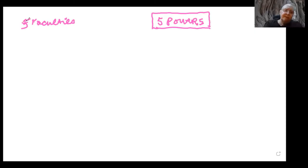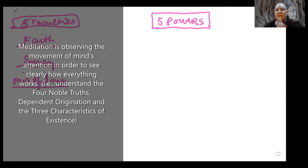The five faculties are faith, energy, mindfulness—and this is the one that is different than what is being taught in the sterilized kind of mindfulness. Listen carefully to the two definitions. Meditation is observing the movement of mind's attention in order to see clearly how everything works—to understand the Four Noble Truths, Dependent Origination, and the Three Characteristics of Existence. That's what he was attempting to do, and there's tons of evidence of that in the texts.